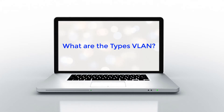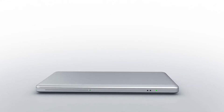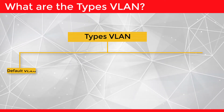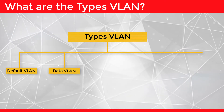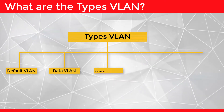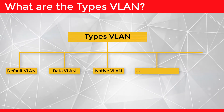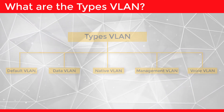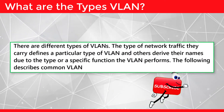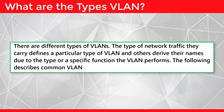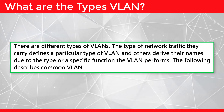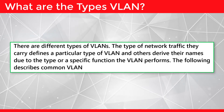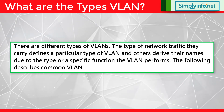What are the types of VLAN? There are different types of VLANs: Default VLAN, Data VLAN, Native VLAN, Management VLAN, and Voice VLAN. The type of network traffic they carry defines a particular type of VLAN, and others derive their names due to the type or specific function the VLAN performs.